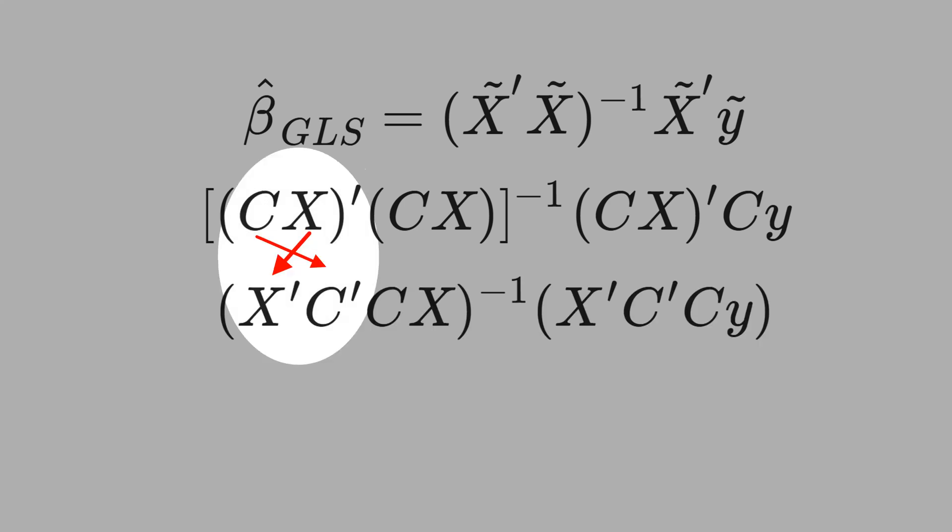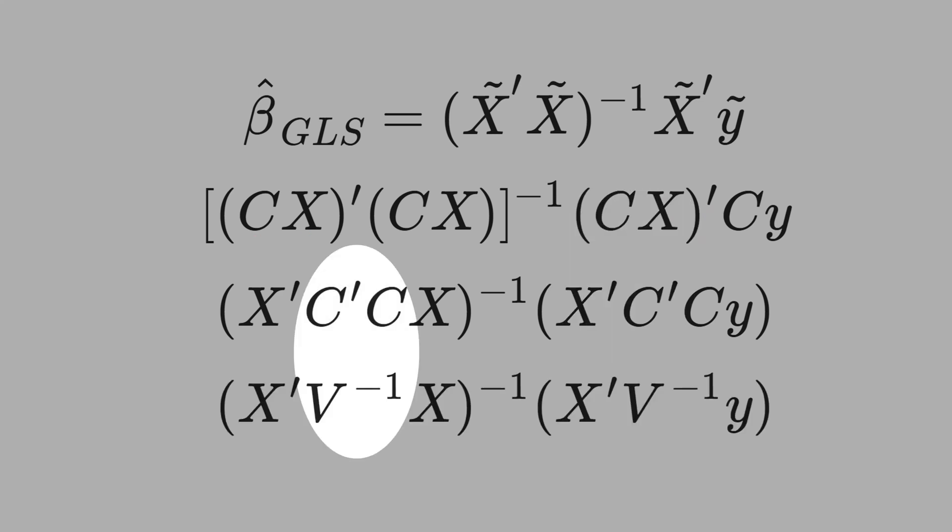Now, let's apply the transpose operator. You have to invert the matrix, and put the transpose in each term. We did the same process for this transpose here. See that we change C and X, and put the transpose. And by definition, C times C is the inverse of V. We did the same substitution in this side as well.